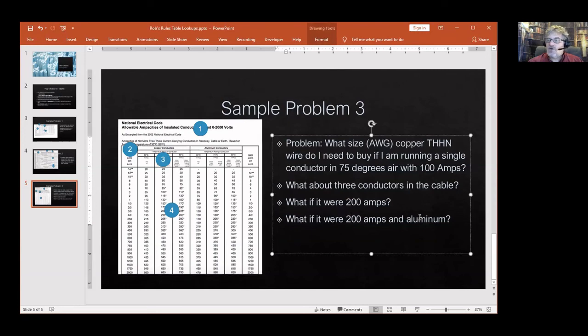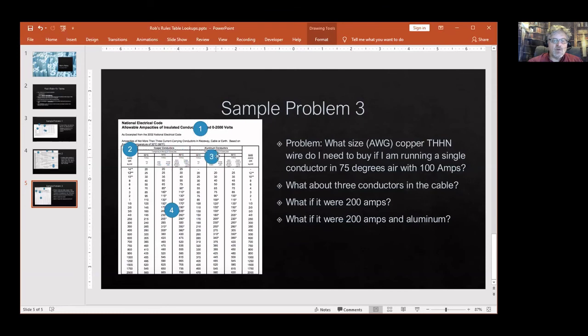What if we're 200 amps and I chose aluminum wire? Oh aluminum, well I'm on the wrong column because aluminum is on the right side of this table so I'd slide that over to where THHN is in the aluminum. And now I'm talking at 200 amps. I don't have a 200 amps in aluminum so how do I solve this? I round up.